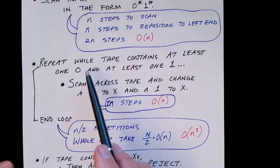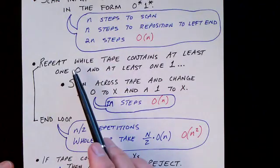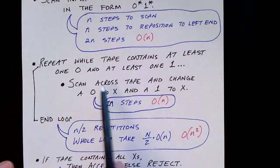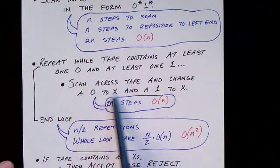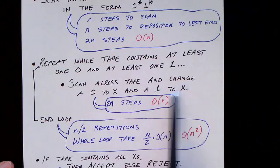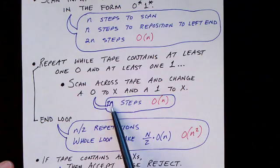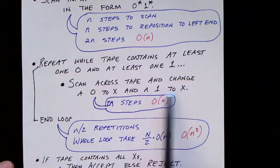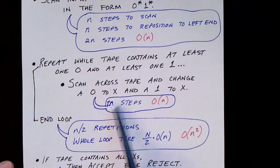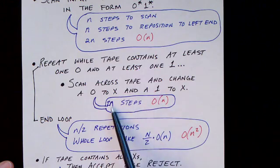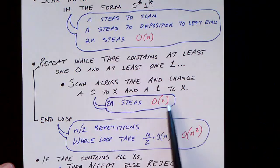Now for the loop, we have to analyze both the inside of the loop and the number of times the loop runs. We scan across the tape from the left end, changing the first zero to an X, keep scanning, and when we encounter a one, change that to an X, then return to the beginning. This takes order 2N steps — if we scan all the way to the blank and return, that's a full 2N steps, though our algorithm may return a little earlier after finding the first one. Nonetheless, this step requires order N time to execute.